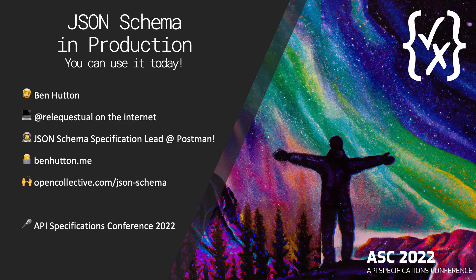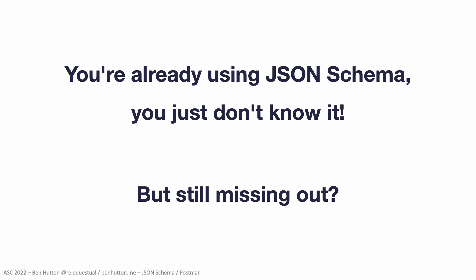First, there's something you should know. You're probably already using JSON Schema — you just don't know it yet. If you use any of the most popular code editors or IDEs and you're editing a JSON configuration file, if you've noticed autocompletion or IntelliSense, you're already using JSON Schema. JSON Schema comes as standard with VS Code, for example. You don't even need to configure it. It just works.